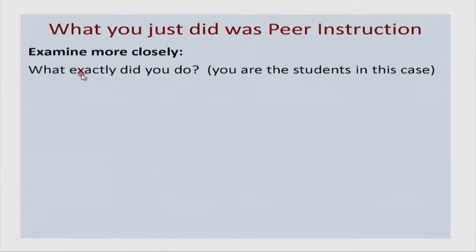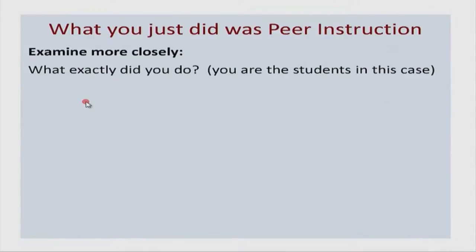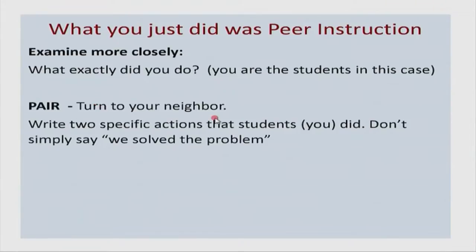This question was an example of the technique called peer instruction. Think more closely about what you did as students: in the first round of voting, you voted, then saw the answers, discussed with your neighbor, and thought about the right answer again. What were the specific actions students were taking? In pairs, turn to your neighbor and write two specific actions that students did — not just 'solved the problem' or 'voted,' but the actual cognitive actions.